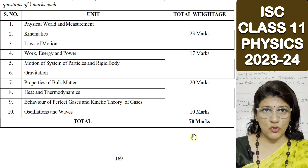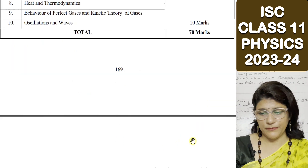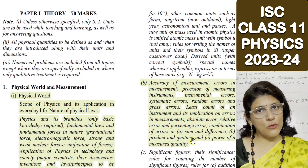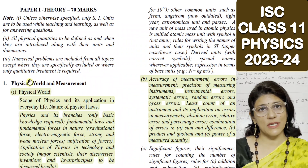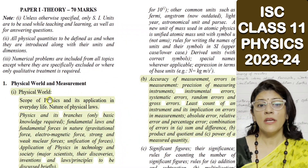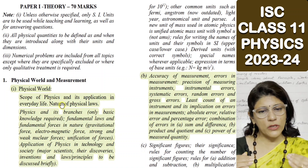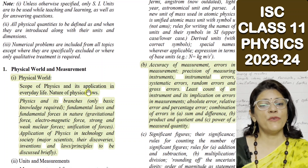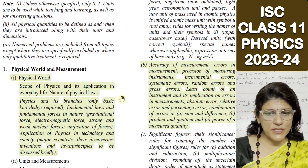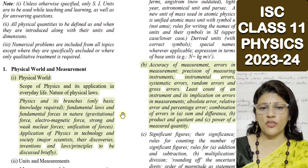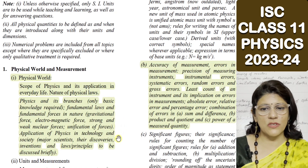This is the mark distribution for your 70-marks theory paper. Now coming to the reduced topics unit-wise. The first unit is Physical World and Measurement. In this unit, the Physical World sub-topic is entirely deleted — scope of physics and its application in everyday life, nature of physical laws, and physics and its branches — all these topics have been reduced.